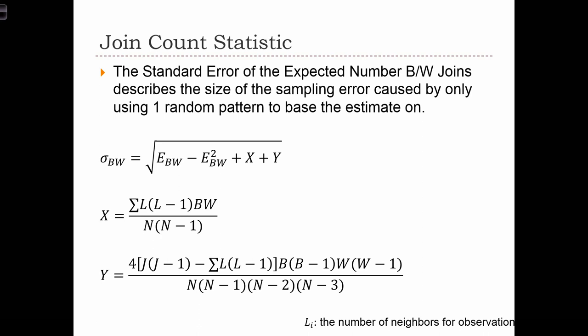In this case, the standard error of the black-white joint count is quite a complicated statistic. E_BW is just the same E_BW from the previous slide, and this is just E_BW squared. But we're also going to introduce an x and a y, where x is this equation over here, and y is this one down here.